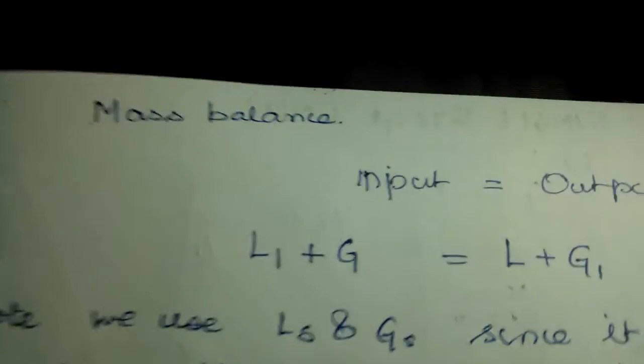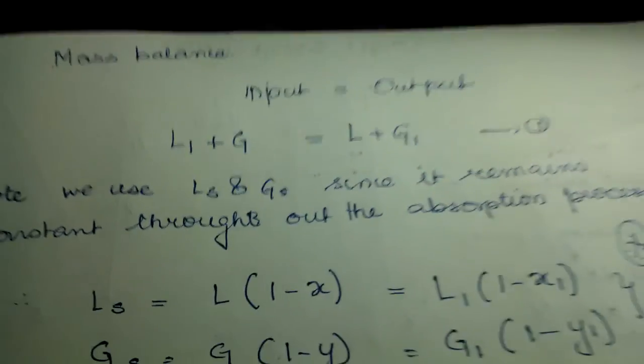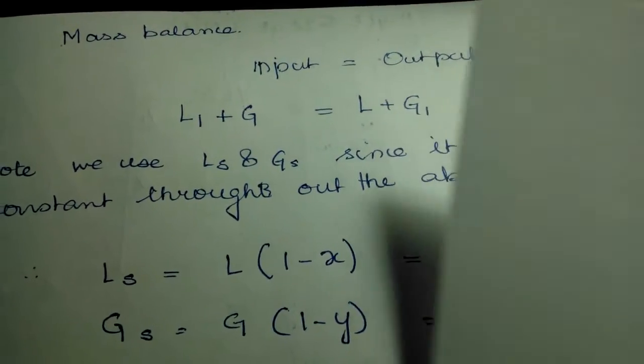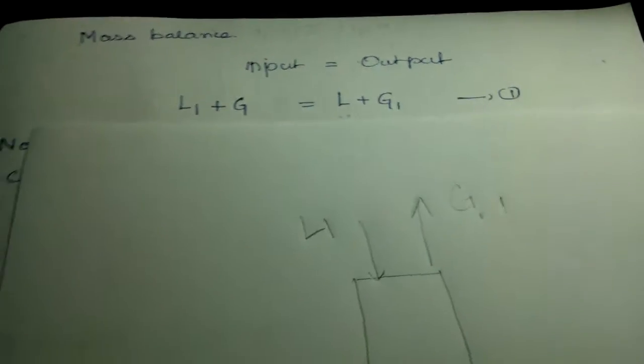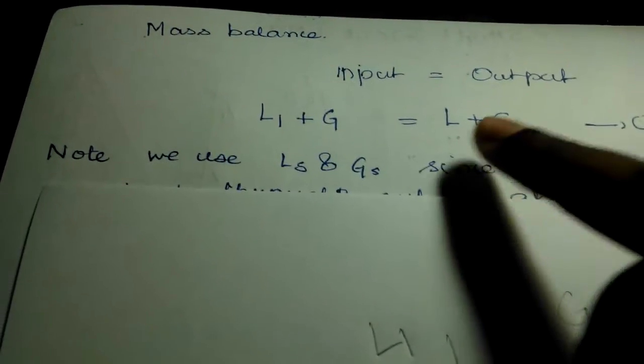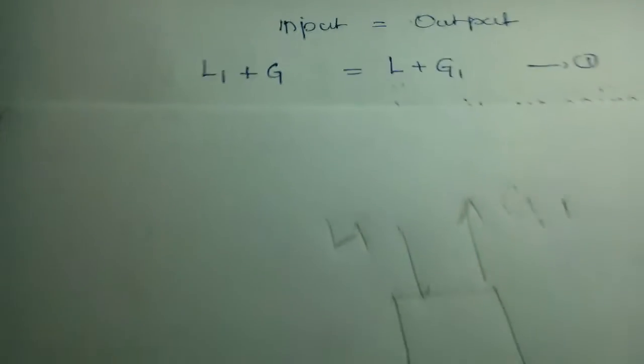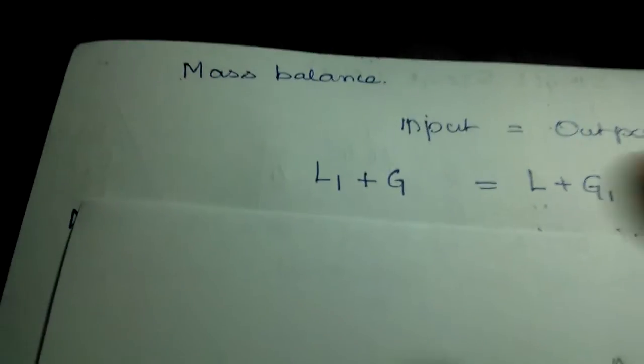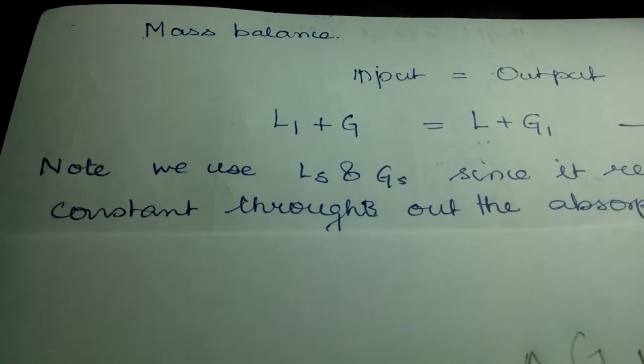I'm just going to write L1 because that's more important. Now looking at the mass balance and the diagram, the input is L1 and G - the arrow is inwards for L1, and G is counter-current. The output is L and G1. We're saying that input equals output - that's your mass balance.